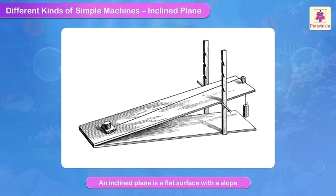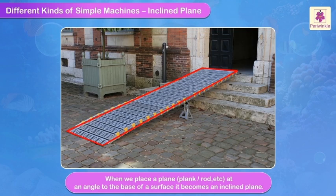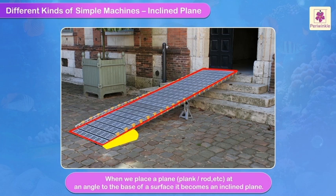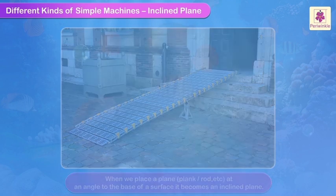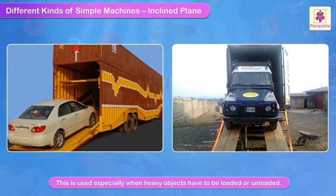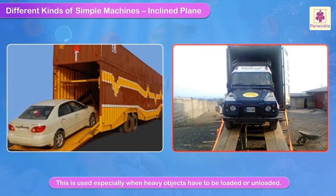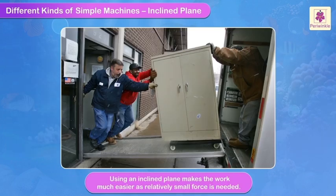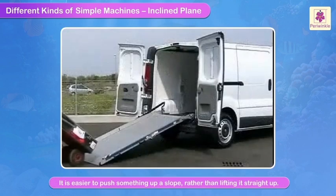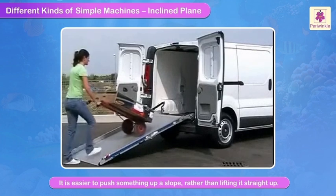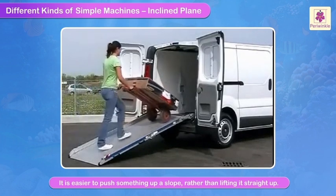Inclined plane. An inclined plane is a flat surface with a slope. When we place a plank or rod at an angle to the base of a surface, it becomes an inclined plane. This is used especially when heavy things have to be loaded or unloaded. Using an inclined plane makes the work much easier as relatively small force is needed. It is easier to push something up a slope rather than lifting it straight up.